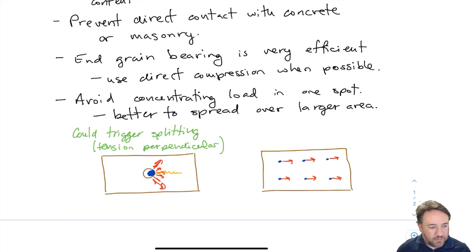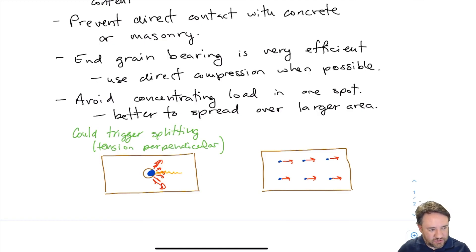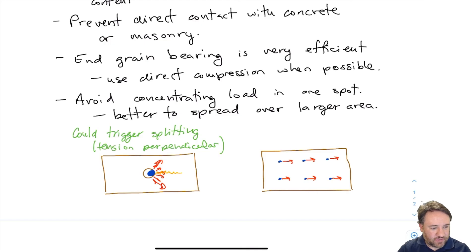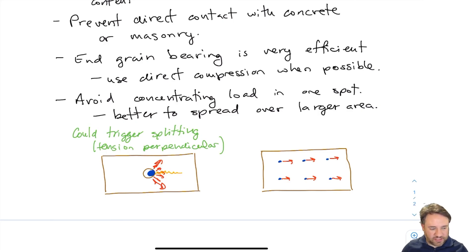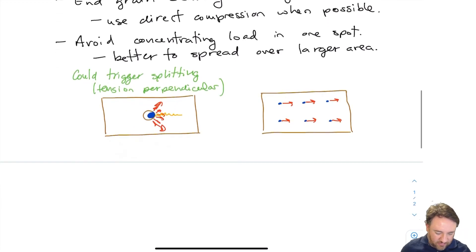It is often more efficient to use many smaller fasteners so that you don't get a large localized tension perpendicular stress. Those two diverging arrows are causing tension perpendicular splitting. To avoid that problem, it's often better not to use really large diameter connectors whenever possible. One exception is split rings or shear plates — the whole idea is to spread the load over a larger area, serving the same purpose.